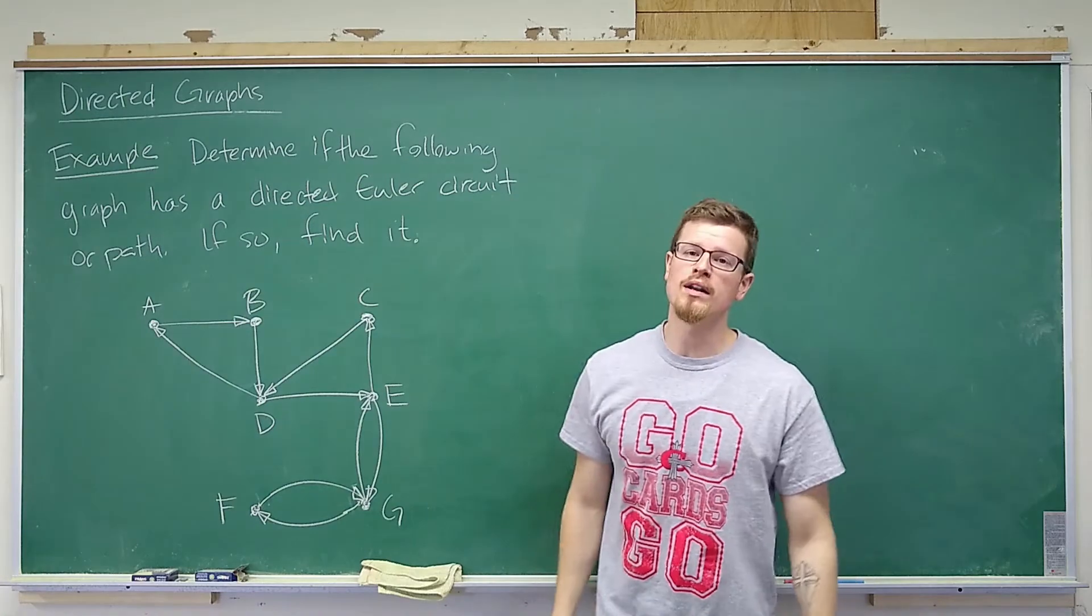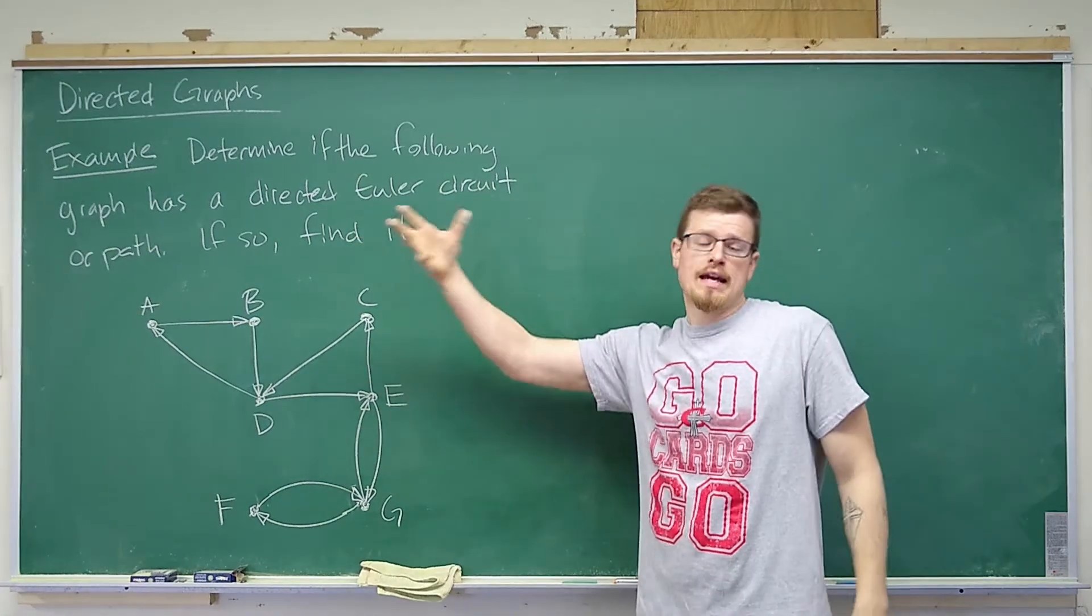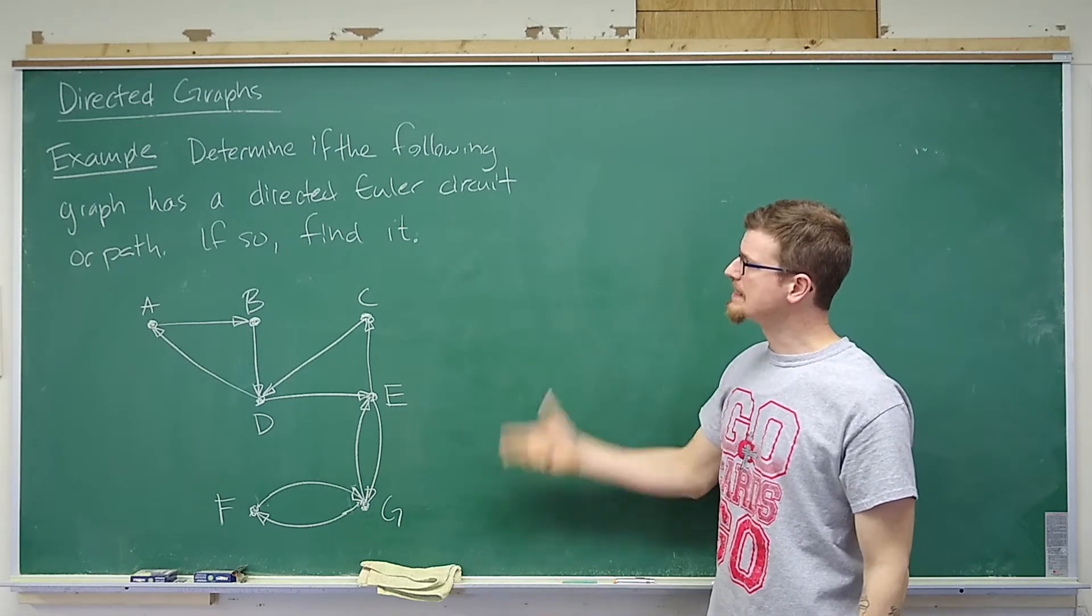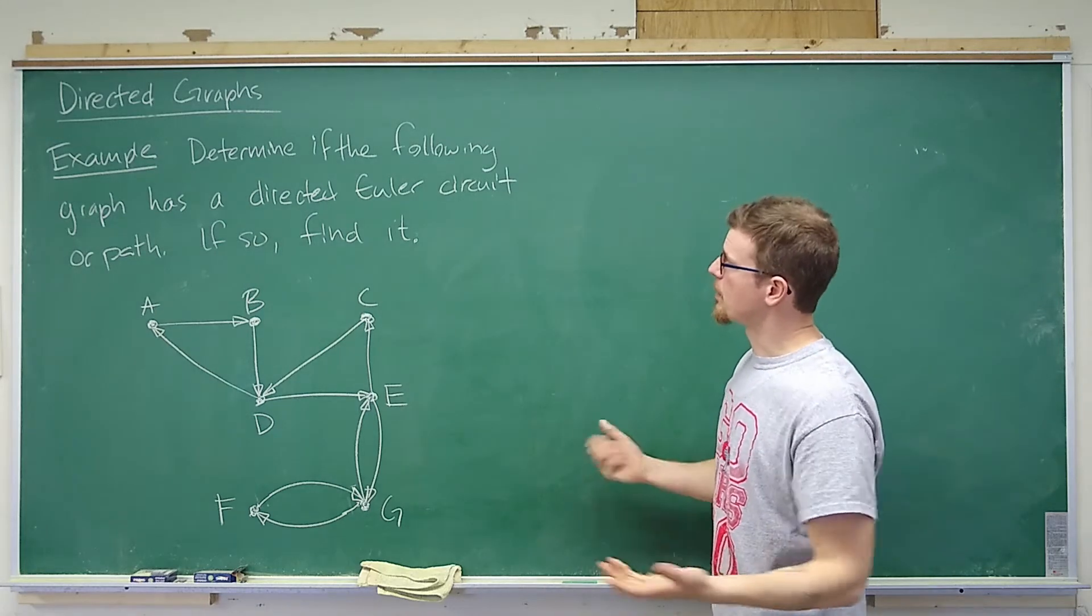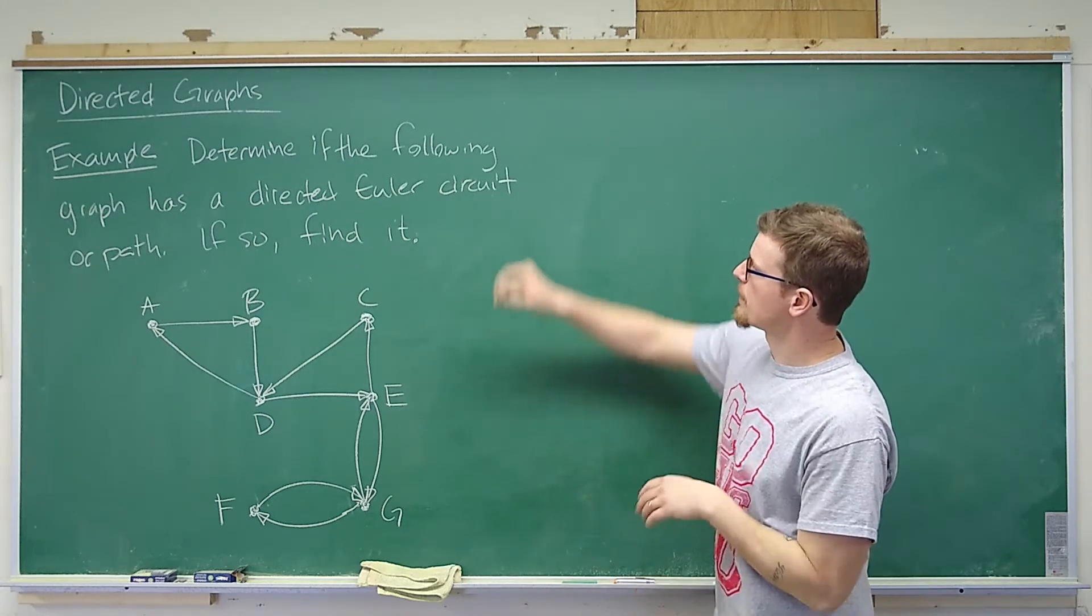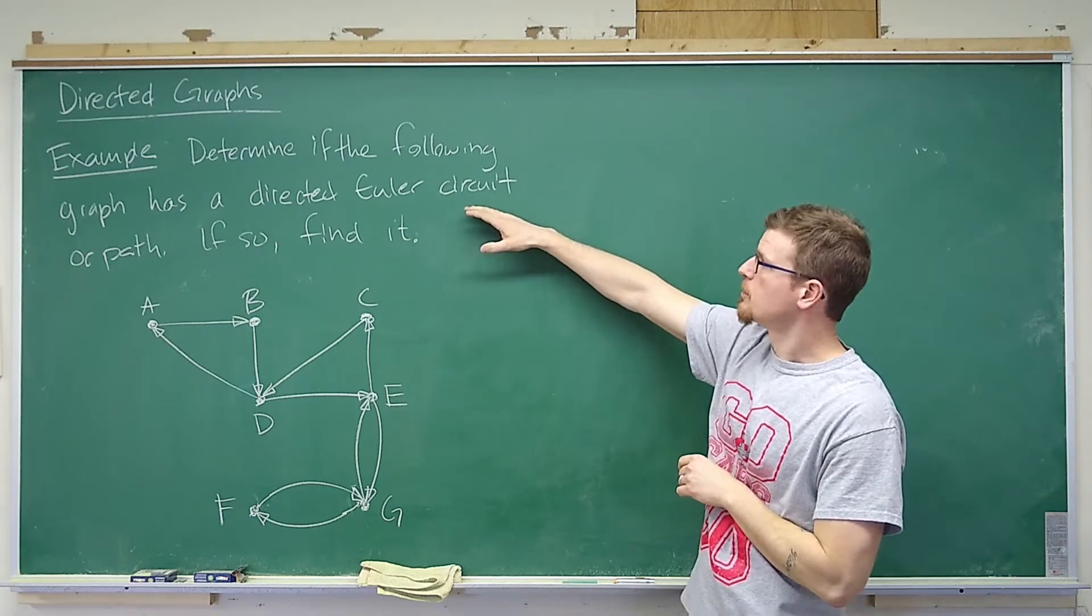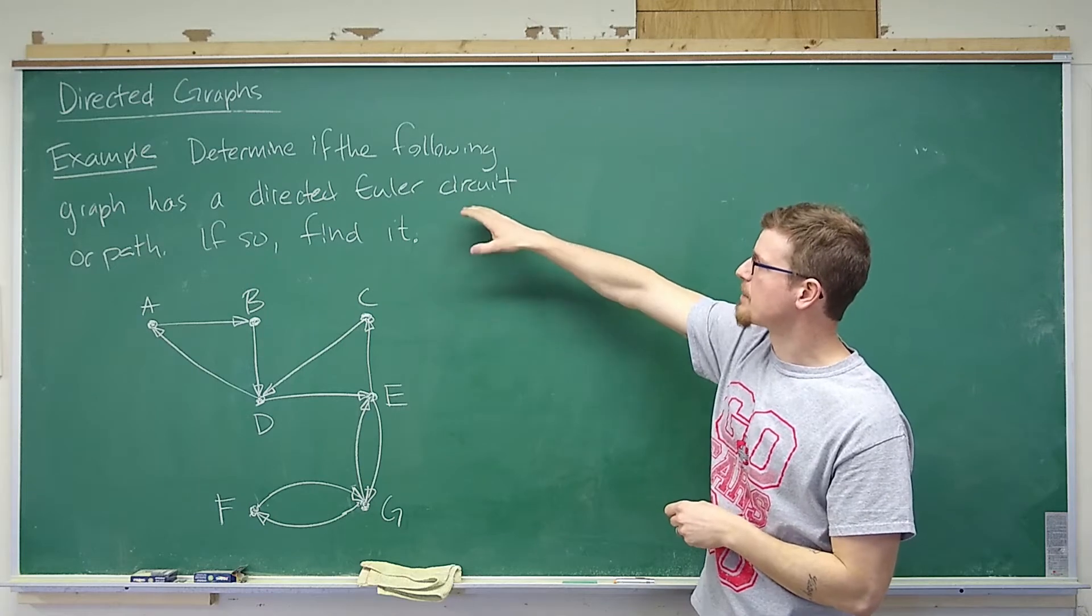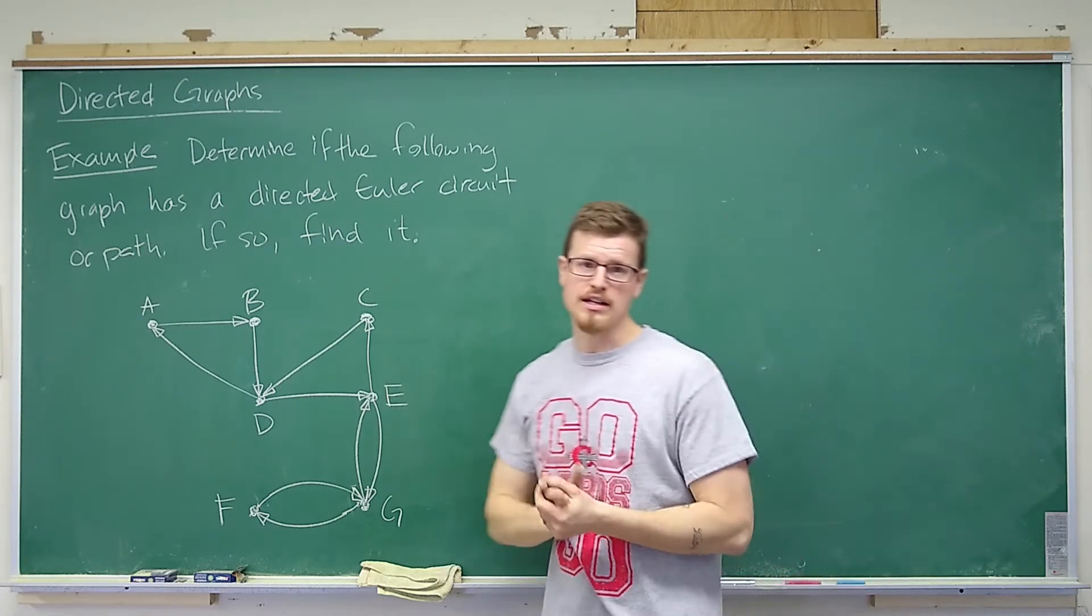Welcome back to the workshop for one last example on directed graphs. We're connecting directed graphs back to regular graphs using a concept we have previously discussed. We want to determine if the following directed graph has a directed Euler circuit or path, and if it does, we want to find it.